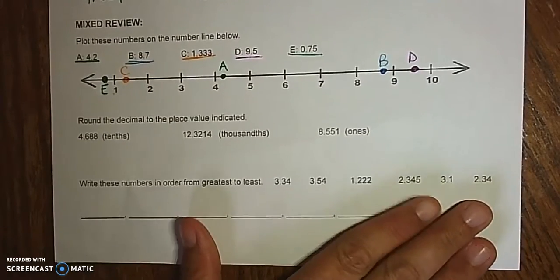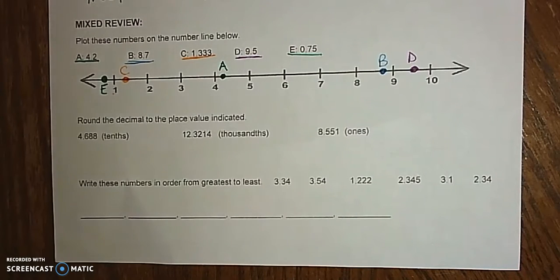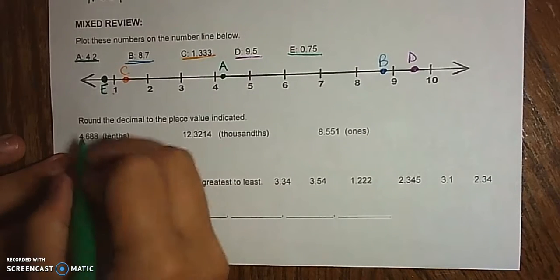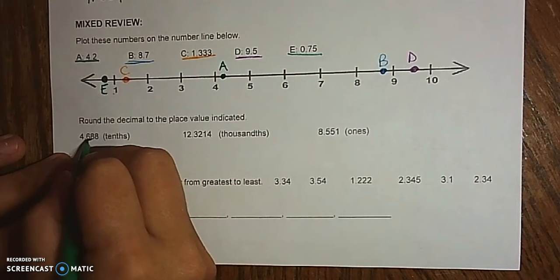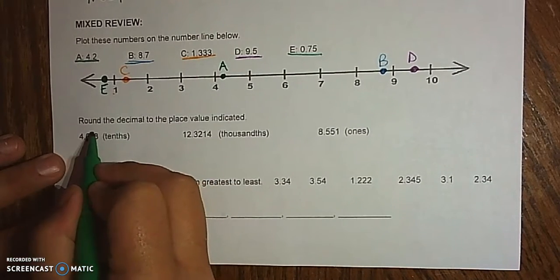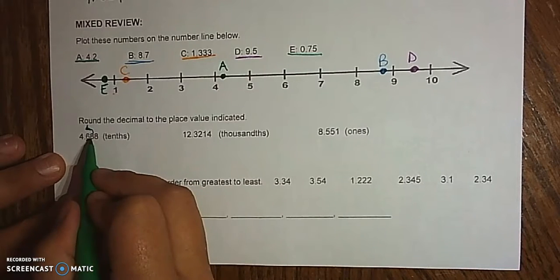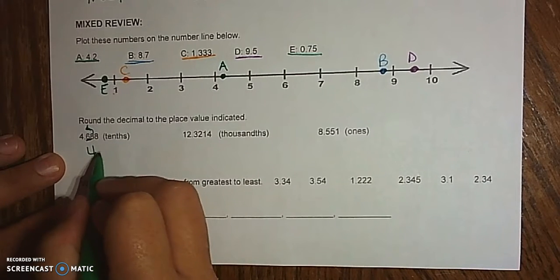We'll round the decimal to the place value indicated. This goes all the way back to our Canvas module, right after we took the Unit 1 test and did properties, so 4.688. Well, this is our tenths, so we have to look at this number, and since this is bigger than 5, we round up.